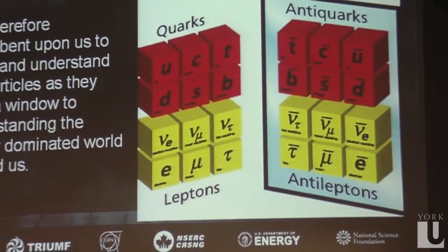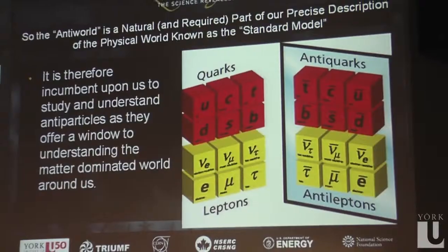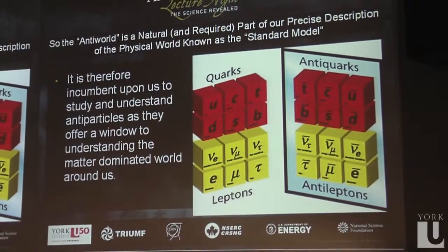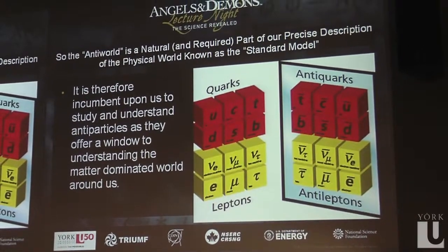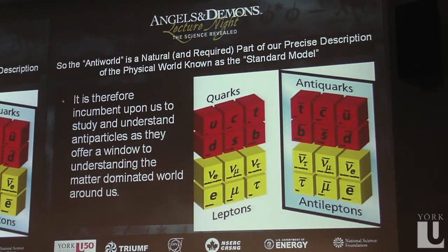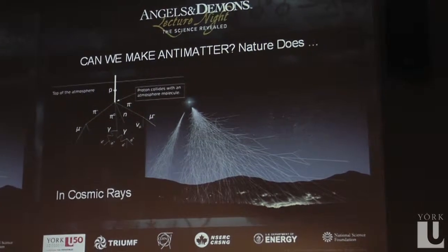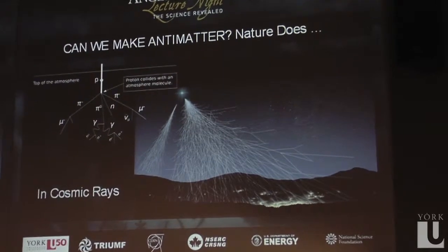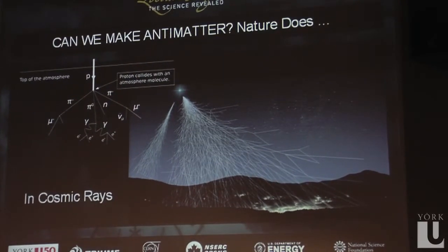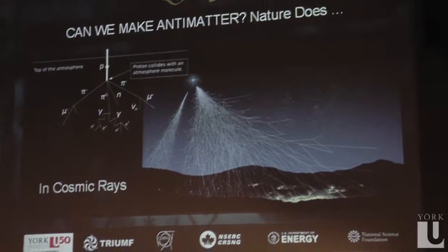So the world is actually composed of quarks, leptons, and antiquarks and antileptons. That is our world, and the theory that we have predicts it with a precision that is unparalleled. The question is then, can we make antimatter? As I said, we saw it created in that picture. As a matter of fact, it's happening all the time.